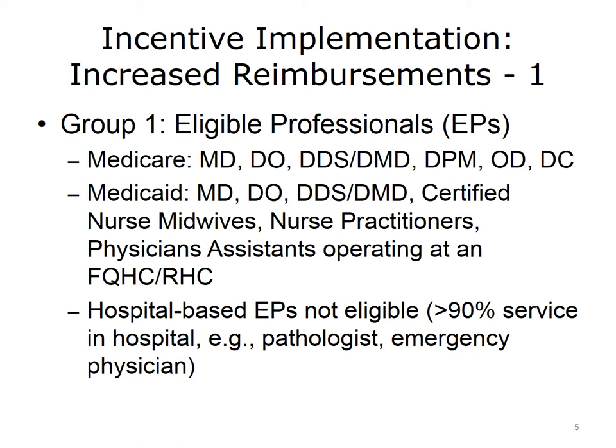Those who achieve Meaningful Use will receive incentive funding through increased reimbursement from Medicare or Medicaid. One group that will receive funding is eligible professionals, or EPs. Several different types of professionals are eligible under Medicare or Medicaid. Physicians, osteopaths, and dentists will qualify under both. Podiatrists, optometrists, and chiropractors will be eligible under Medicare. Certified nurse midwives, nurse practitioners, and physician assistants who work at federally qualified health centers will be eligible under Medicaid. One of the initial controversies concerned hospital-based eligible professionals, in particular physicians who work in hospitals.